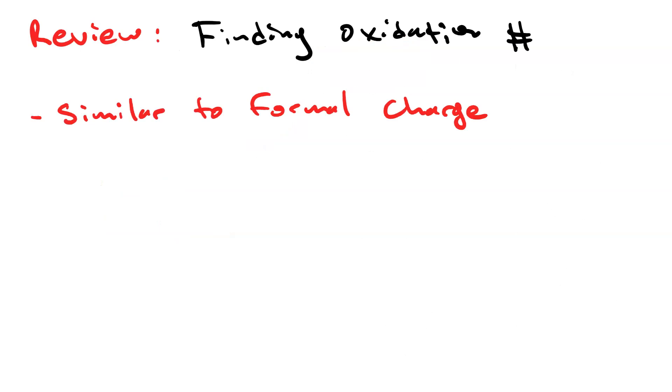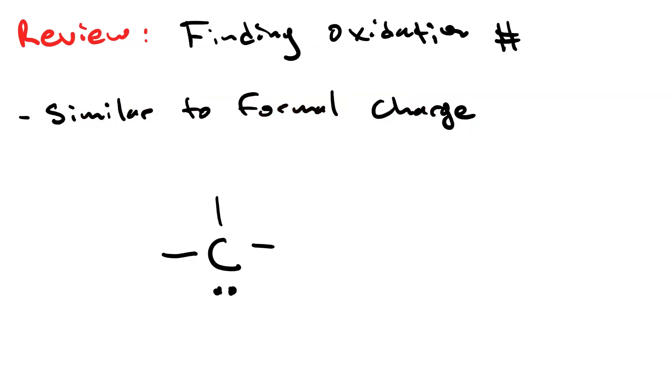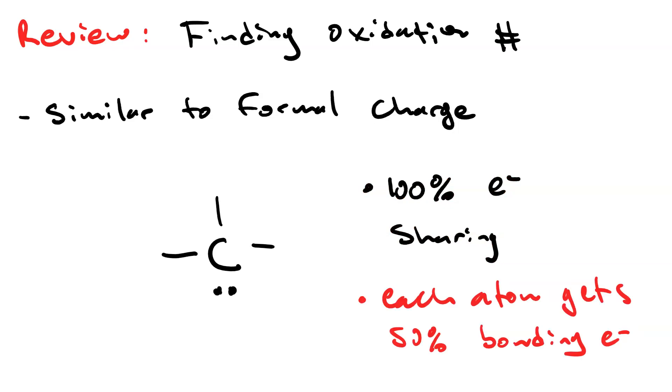Finding the oxidation number is similar to finding formal charge. Here's a carbon with three bonding pairs and a lone pair. When we're doing formal charge, we're in the covalent limit - 100% electron sharing. Since each bond consists of a pair of electrons and each atom gets half of its bonding electrons, it's useful to draw a box around the atom that cuts the bonds exactly in half. Both non-bonding electrons are inside the box. We compare that with what a carbon atom should have - carbon normally has four valence electrons. We take four and subtract the number of electrons in the box, which is five, and we get negative one. So the formal charge on the carbon is negative one and it is a carbanion.